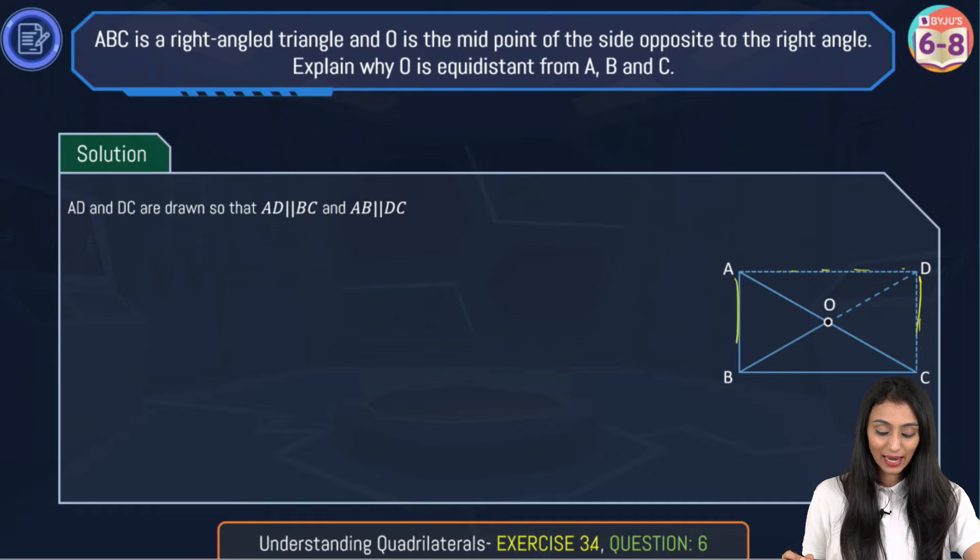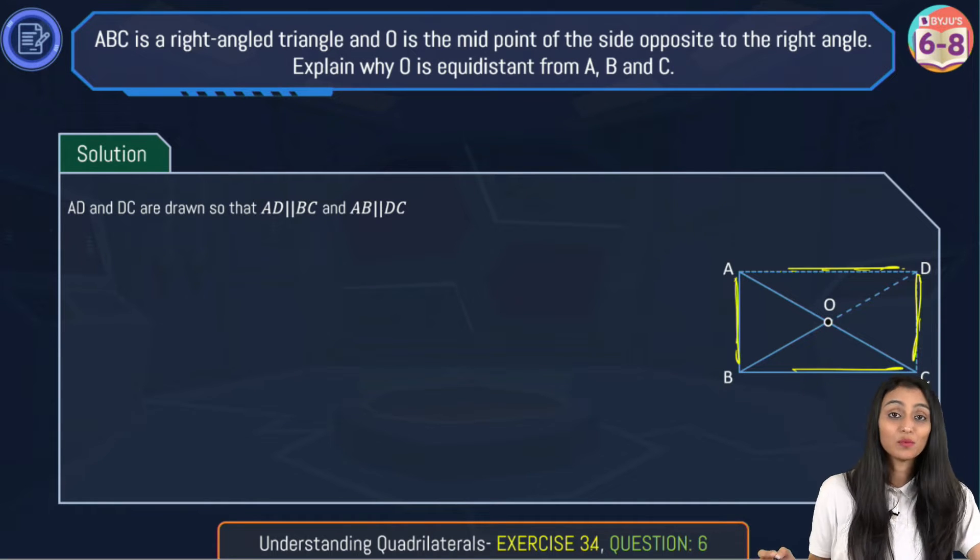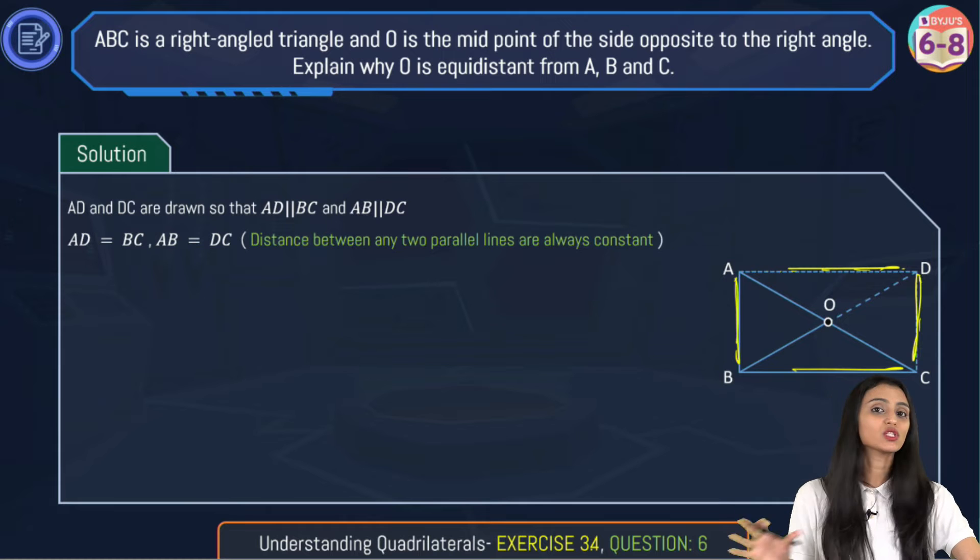Now since these are parallel, we can say that AB would be equal to DC and AD would be equal to BC. The reason being the distance between any two parallel lines is always going to be the same.